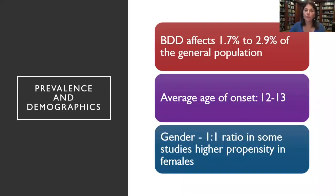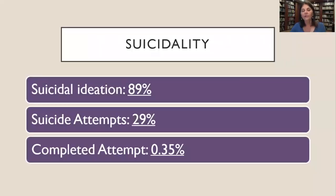This seems to be more and more prevalent in younger and younger children. Interestingly, it's a one-to-one ratio between males and females, which is unusual because in most disorders we see more propensity in females. This is a group of individuals who are very depressed and upset, because unlike OCD, where you could avoid certain things, you can't avoid your body. As a consequence, they have a lot of suicidality — about 89% engage in constant suicidal thoughts and about 29% actually attempt suicide.